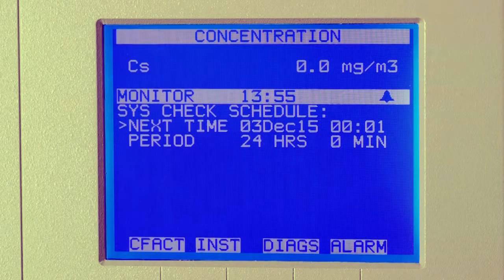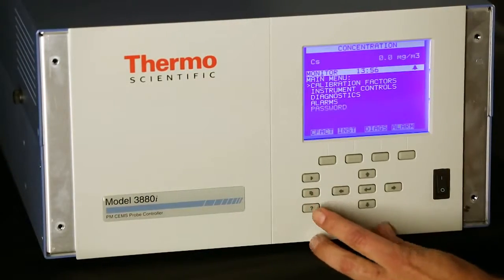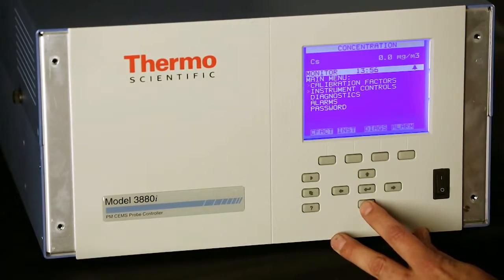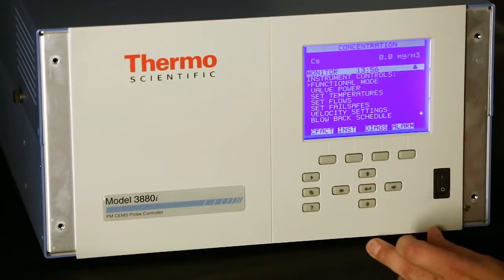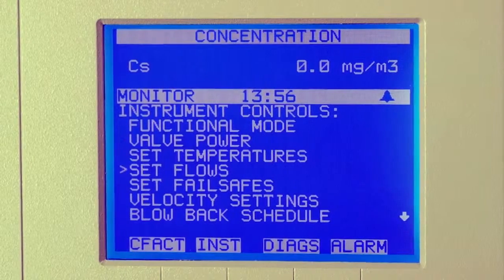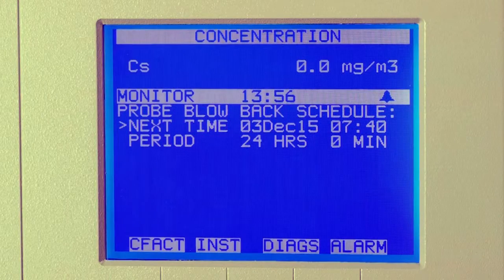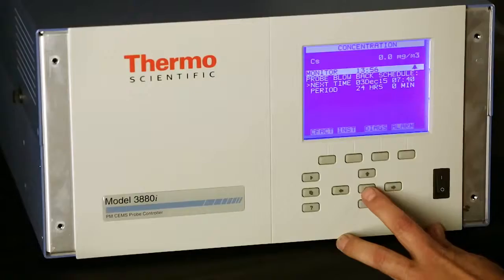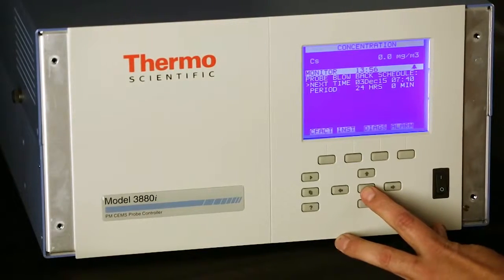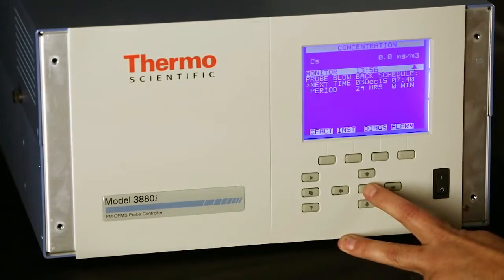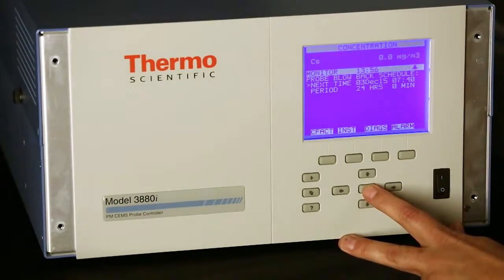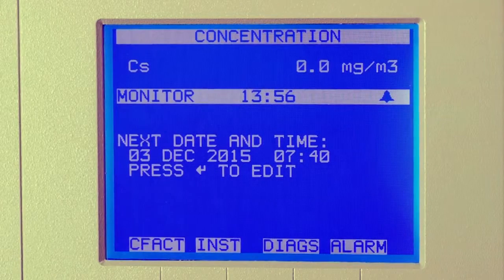From the run screen, go back to the menu, instrument controls, and hit enter. Scroll down to blowback schedule. The last time it started was at 7:40. Hit enter to set up the blowback schedule. The optimum setup time is one o'clock in the morning. Go into the next date and press enter to edit.